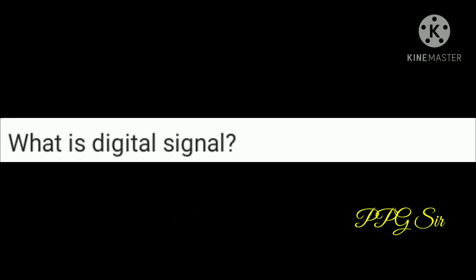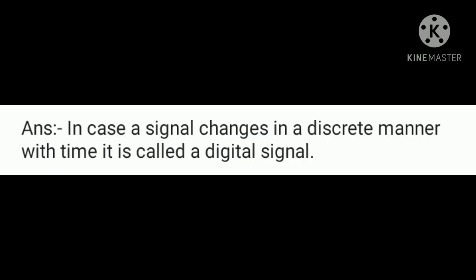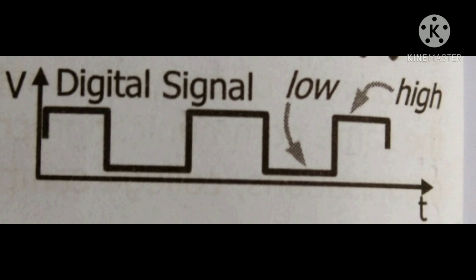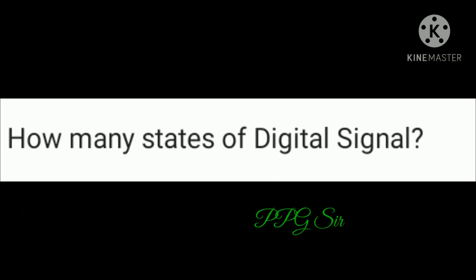What is a digital signal? If a signal changes in a discrete manner with time, it is called a digital signal. This is an example of a digital signal.